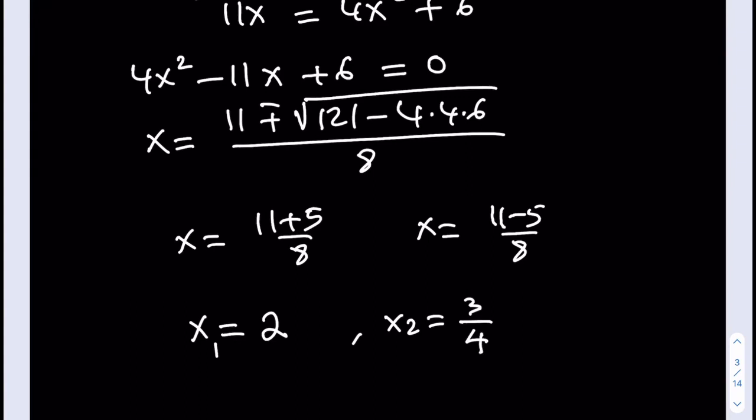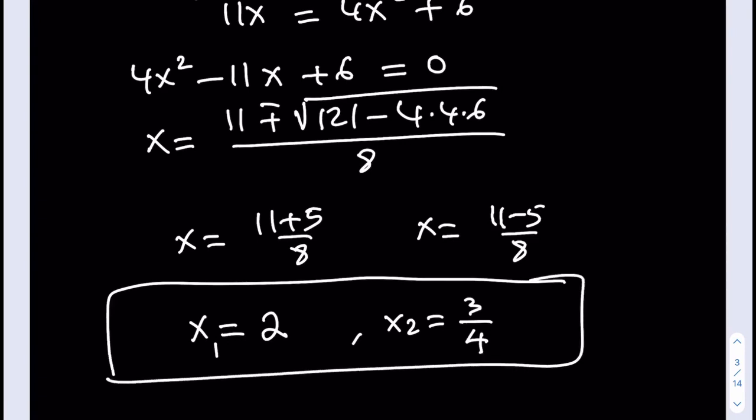Now, you may want to check, like plug it in, but it shouldn't be a problem because we already checked that x equals 0 is not a problem. We didn't square anything. There's no x on the right-hand side. So everything should look good. We have two solutions, and these are the real solutions to our equation.